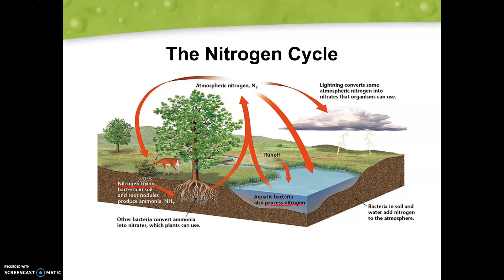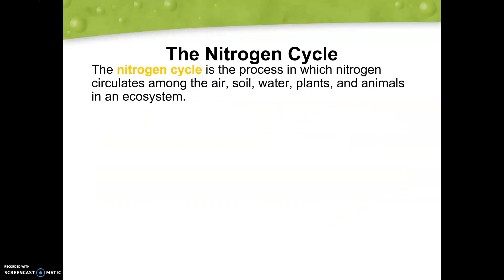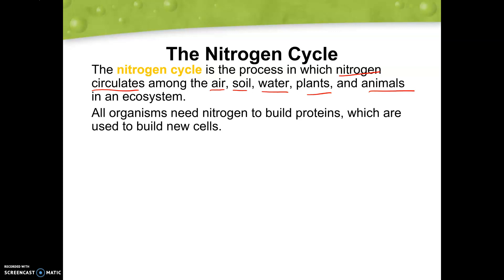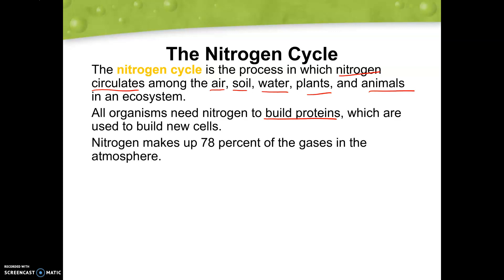The nitrogen cycle is a process by which nitrogen circulates among our air, soil, water, plants, and animals — just like our carbon cycle, moving through all of these different things in an ecosystem. All organisms need nitrogen to build proteins, which is one of our most important building blocks. Nitrogen actually makes up 78% of all the gases in the atmosphere, so it's one of the most abundant resources — even more present than oxygen — and would not be considered a limiting chemical.